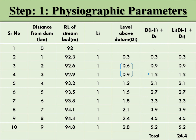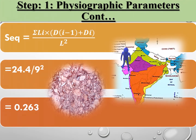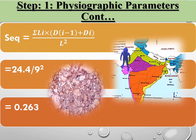The next column is di. In that column, as shown by the arrows, 0.6 plus 0.9 is 1.5, 0.9 plus 1.2 is 2.1, and so on. The last column is the multiplication with the length of a section, and the summation of that gives 24.4. S equivalent is equal to that summation divided by the length of a section divided by the length of the mainstream squared, giving a value of 0.263.